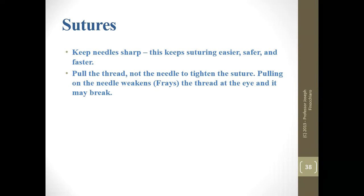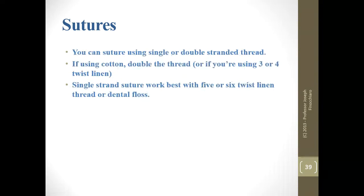Always pull on the thread, not the needle, because pulling the needle will fray and snap it and then you'll have to re-thread with whatever length remains. Embalmers use single or double-stranded threads. Single strand works well and generally doesn't result in leaky incisions. Double-stranded thread works well when it absolutely has to be done — typically for autopsies. If you're using cotton or thin three- or four-twist linen, double the thread, otherwise it might snap or cut into something. Single strand works best with thicker threads — five-twist or better.